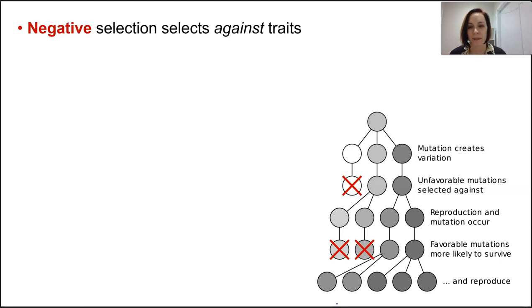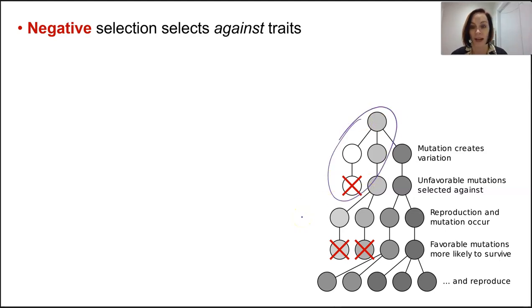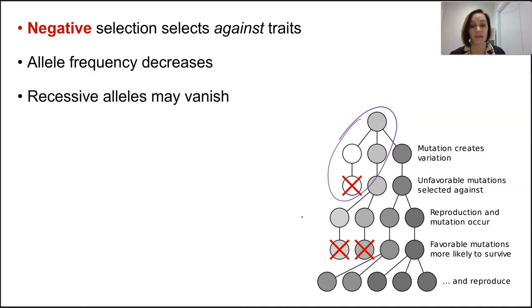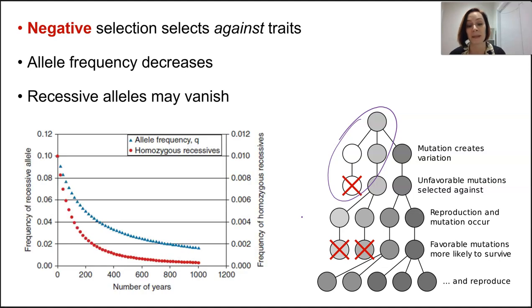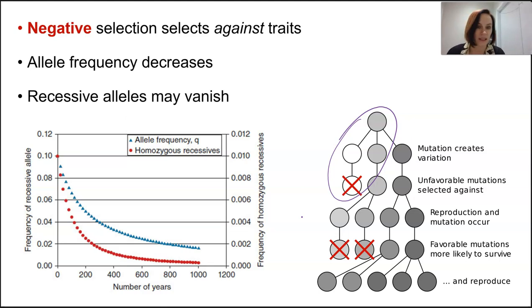Negative selection is the opposite — it removes or slowly decreases the frequency of a heritable trait in the population. If it's a recessive allele, homozygous recessive individuals will be selected against and can be eliminated from the population completely. Heterozygous individuals have an advantage because they display the dominant phenotype. If a dominant trait is being removed, eventually only the recessive trait may remain.